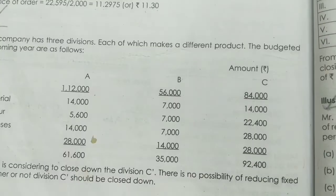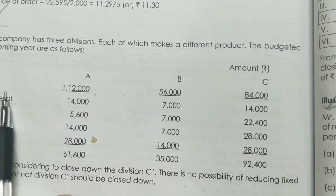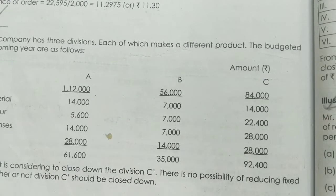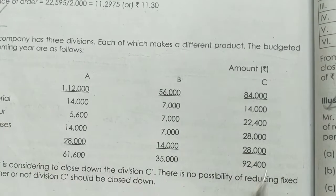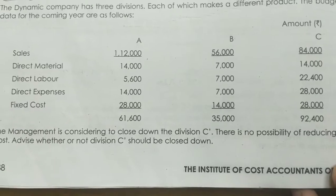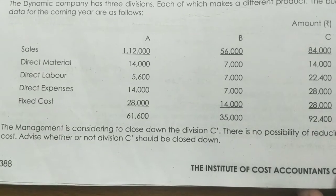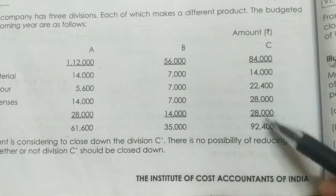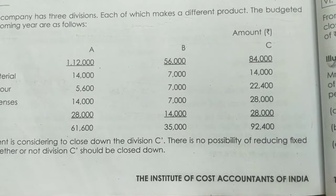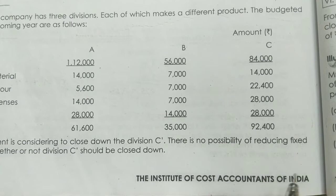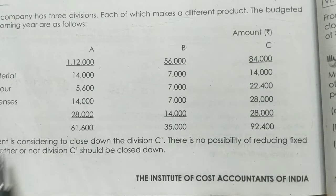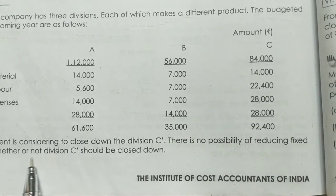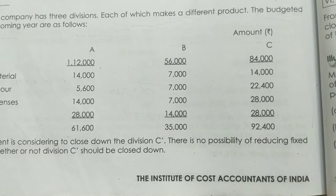The budgeted data covers sales, direct material, labor, direct expenses, and fixed cost. The management is considering closing down Division C. There is no possibility of reducing fixed cost. The question is: advise whether or not Division C should be closed down.